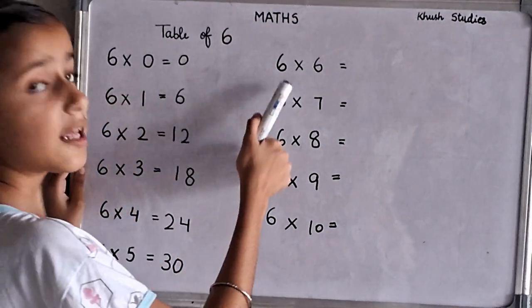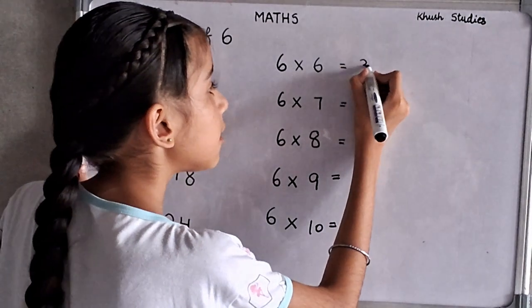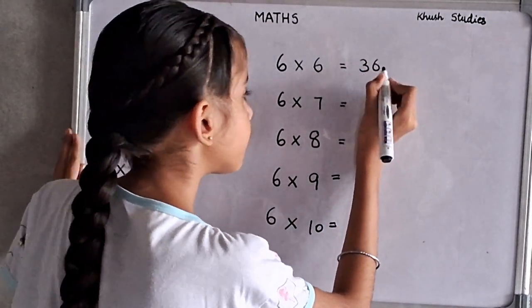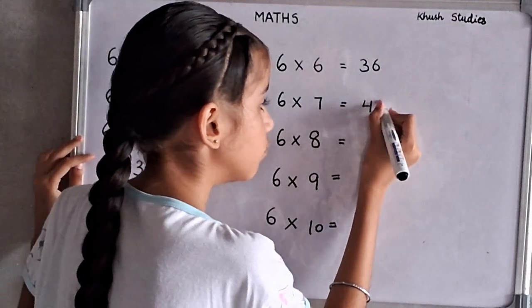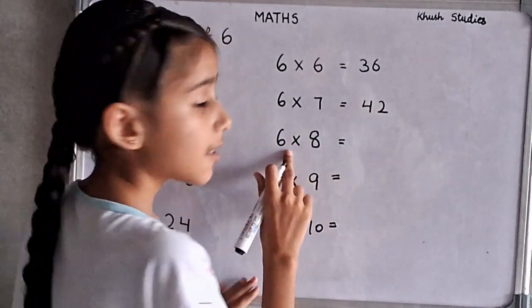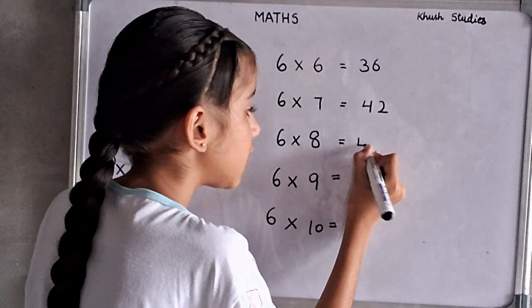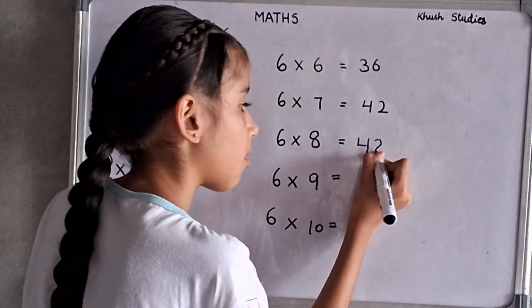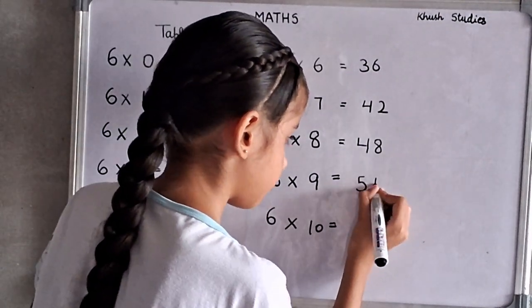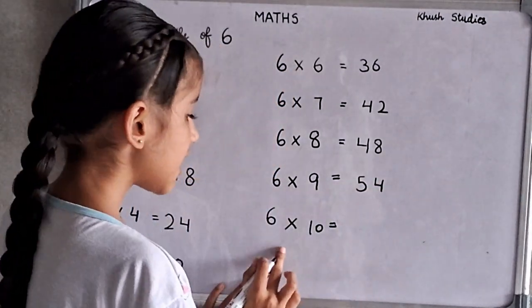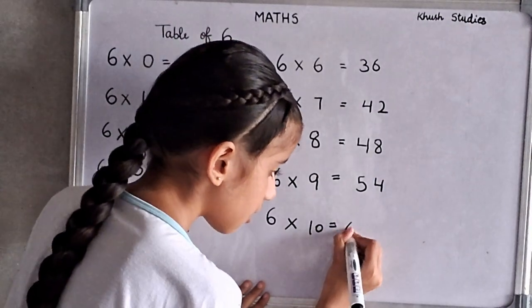6 sixes are 36. 6 sevens are 42. 6 eights are 48. 6 nines are 54. 6 tens are 60.